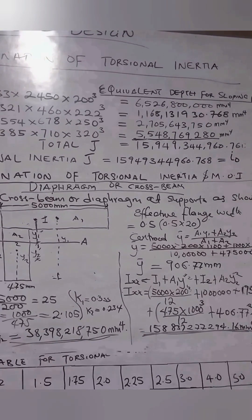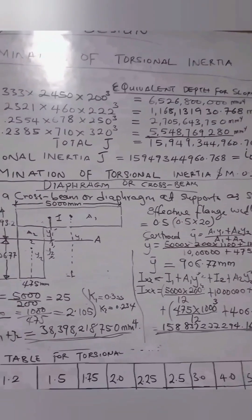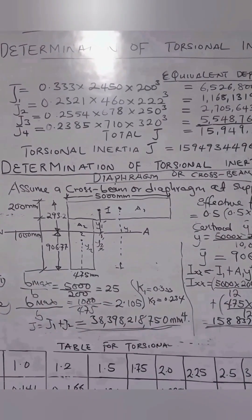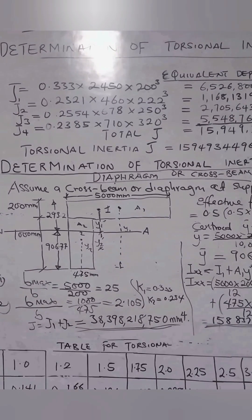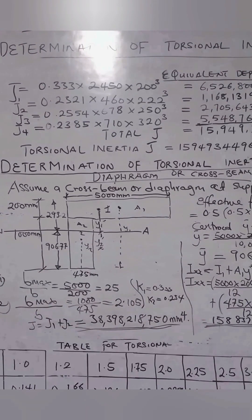We then obtain the torsional inertia of this cross beam using the St. Venant torsion principle. For the ratio 5,000/225, which is greater than 10, K = 0.333. For the ratio 2.105, interpolation gives K = 0.234. Plugging these into the formula, the total torsional inertia of the cross beam or diaphragm is 38,398,218,750 mm⁴.